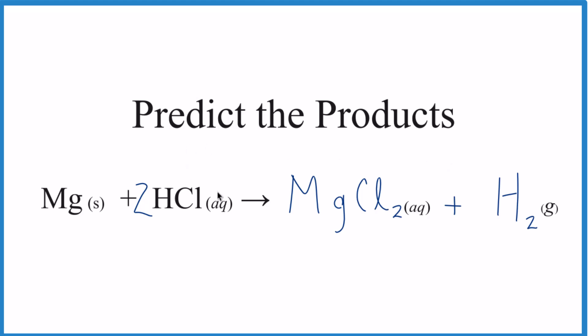So that's how you predict the products. See what type of reaction you have here, a single replacement. Then make sure that the ionic compound has its charge balanced, and then balance the equation. That's it.